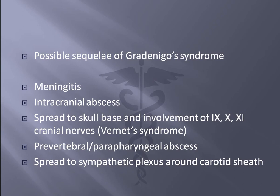The possible sequelae of Gradinego syndrome include: when there is intra-dural connection, meningitis, intracranial abscess, spread to the skull base, and involvement of the 9th, 10th, and 11th cranial nerves, which is called the Vernet syndrome. There may also be pre-vertebral and parapharyngeal abscess spread to the sympathetic plexus around the carotid sheath.